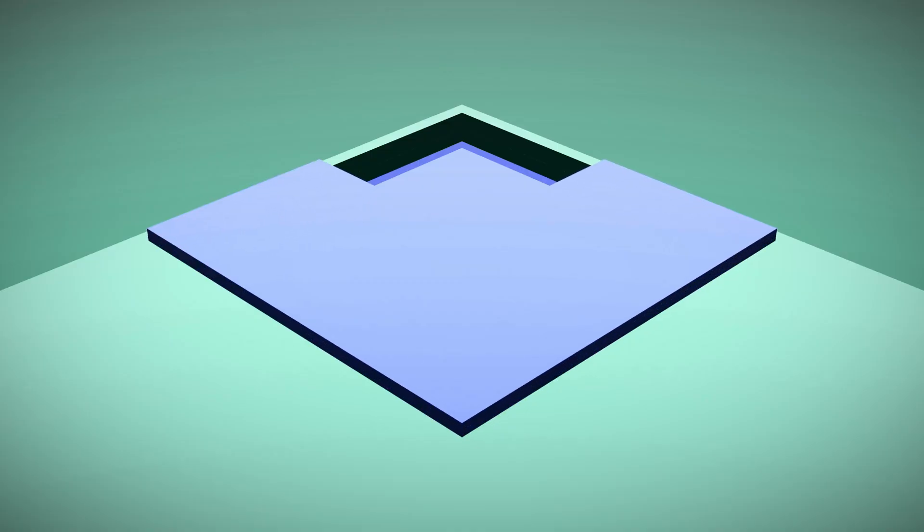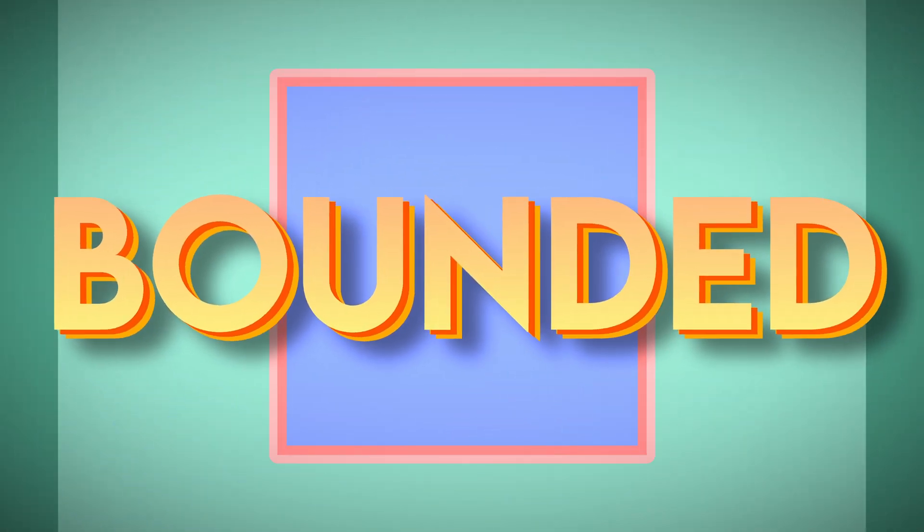Consider a square that is repeatedly filled halfway. While this process continues infinitely, the total area remains bounded. Similarly, despite its infinite length, Gabriel's horn behaves like a convergent series, where an endless sum still results in a finite quantity.